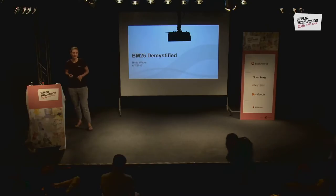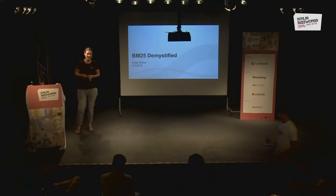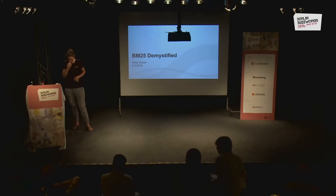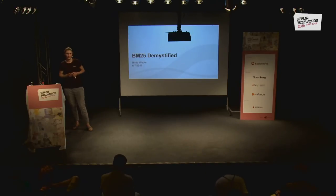I'm Britta, I'm a developer at Elastic, and I work on Elasticsearch Core. Today I'm going to talk about BM25, which is a method to sort documents that contain natural language text, like articles or tweets or mails, according to their relevance to some keywords.